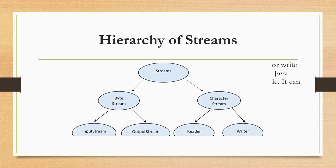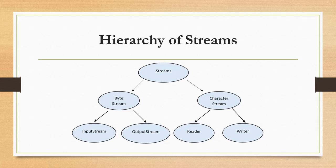Stream hierarchy — in streams there are byte stream and character stream. The illustration shows that InputStream and OutputStream belong to the byte stream, while Reader and Writer belong to the character stream.